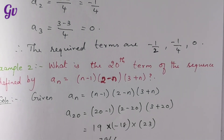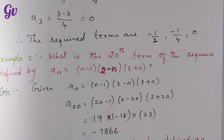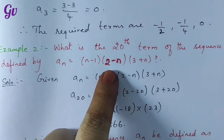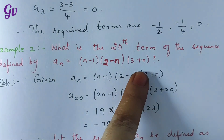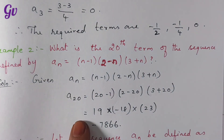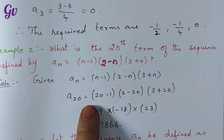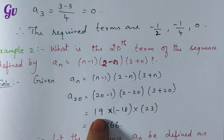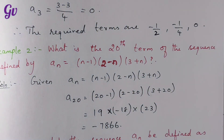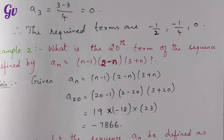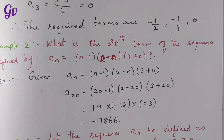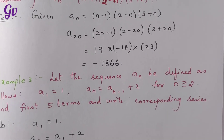Next, find the twentieth term of the sequence defined by an equal to n minus 1, times 2 minus n, times 3 plus n. To find the twentieth term, substitute n equal to 20. So we get 20 minus 1 equals 19, times 2 minus 20 equals minus 18, times 3 plus 20 equals 23. Multiplying these together gives minus 7,866. So the 20th term is minus 7,866.